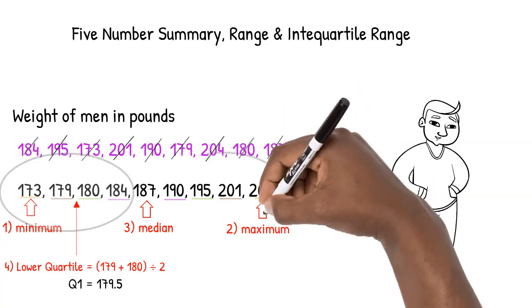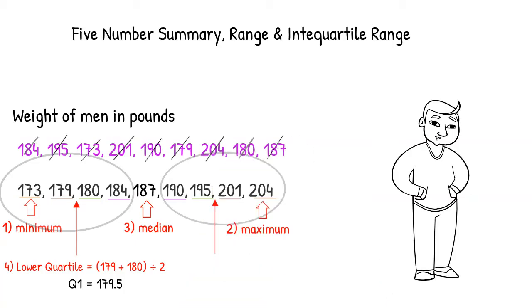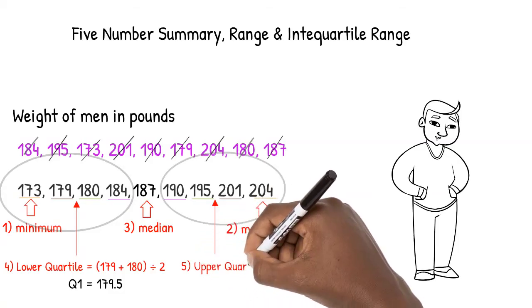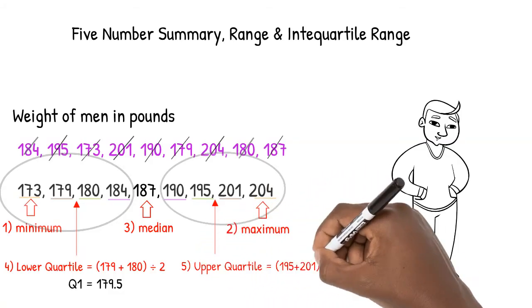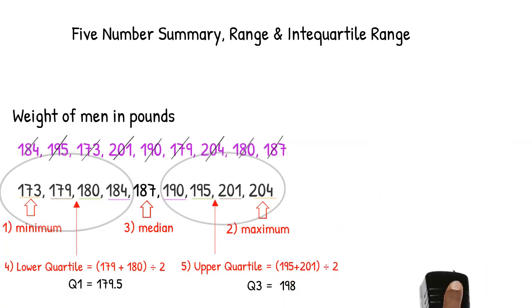The fifth and final number in our summary is the upper quartile. The upper quartile is the median of the upper half of the numbers, again disregarding the median. The upper quartile, otherwise known as Q3, in this case is the average of 195 and 201, which is 198 pounds.